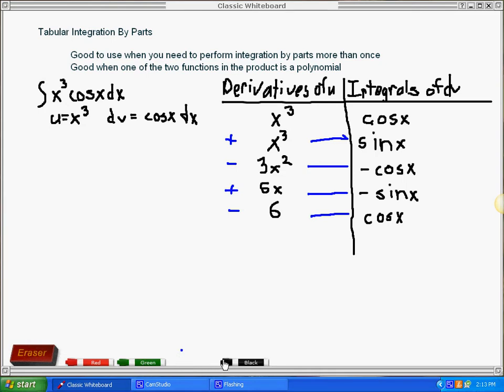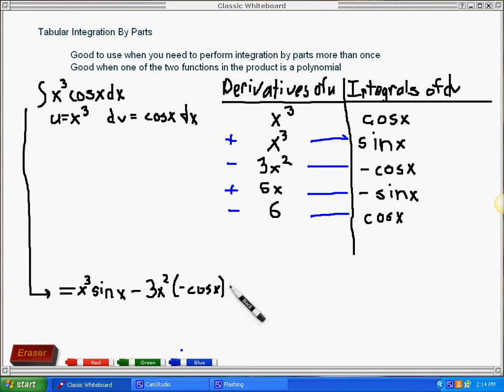When I go to write my answer, this is equal to the first row, which is x to the third sine x. The first term is positive, the second term is negative, so we go minus that next product, which is 3x squared times minus cosine x. Next term is positive, and we take the product here, which is 6x minus sine x times minus sine x. And then we got the very last term, which is going to be 6 times cosine x.